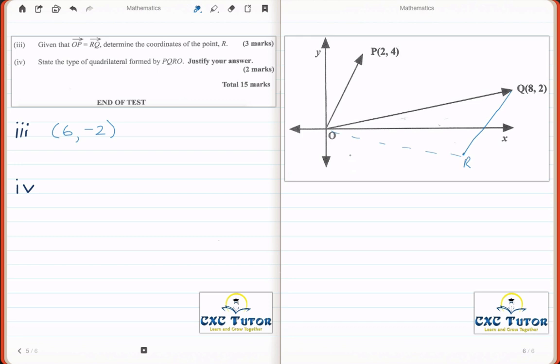it asks us to state the type of quadrilateral formed by P, Q, R, and O. So, let me just finish the diagram. If I draw a dotted line from here to here, we can easily see that the shape form is that of a parallelogram.